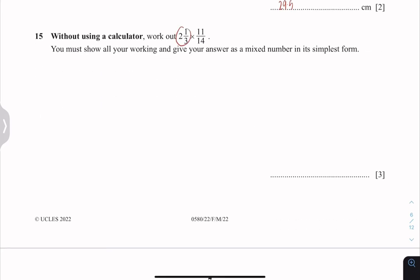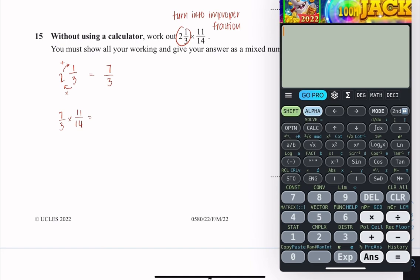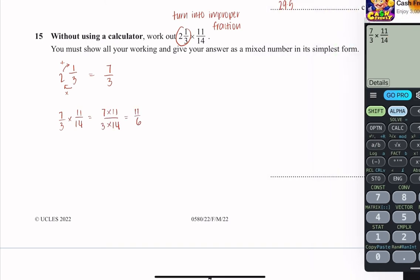Question 15 is a fractions question. We need to turn 2 and 1 over 3 into improper fraction. 3 multiply with 2 plus 1. So 3 times 2 plus 1 is 7. The denominator which is 3 remains the same. So 7 over 3 multiply with 11 over 14. Put that into your calculator.